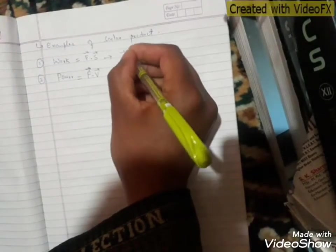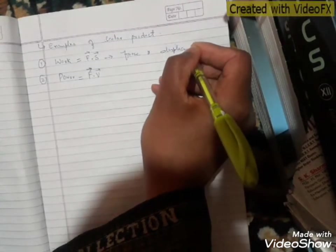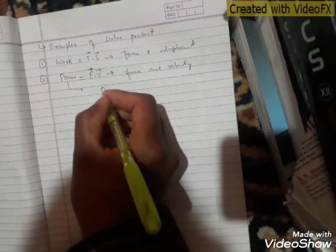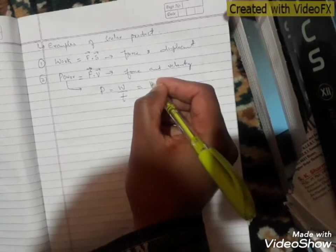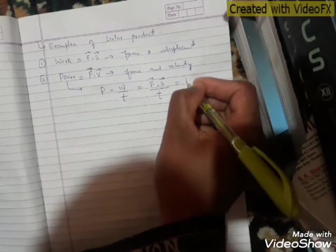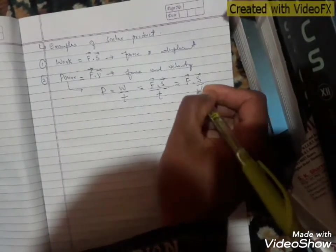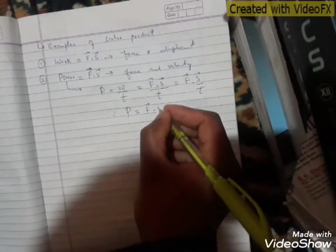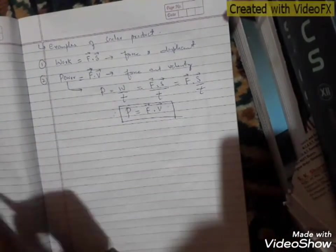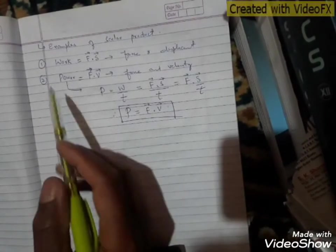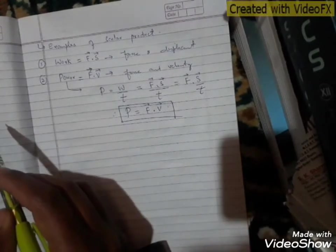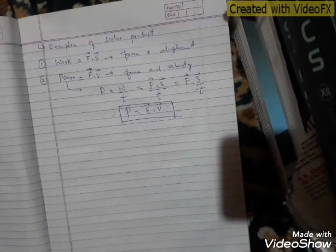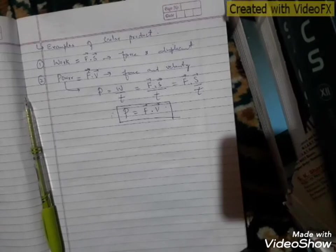Work is the scalar product of force and displacement, and power is the scalar product of force and velocity. Power is the rate of doing work — it is W divided by t. Work itself is force dot displacement, so power P equals F dot S divided by t. Since S divided by t is displacement by time, that is velocity. Therefore, power P equals F dot V — the scalar product of force and velocity. So both work and power are scalar quantities expressed as scalar products of vectors.